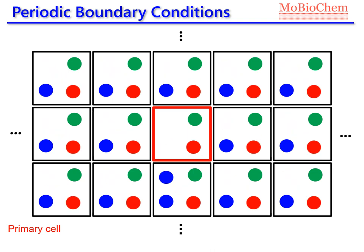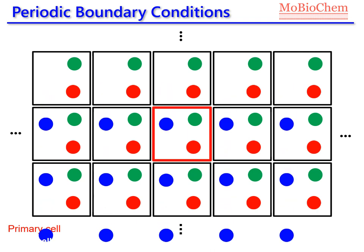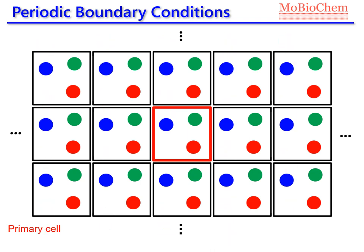If the blue molecule leaves the primary cell, another blue molecule enters the primary cell from a replica cell. In this way, we conserve the number of atoms in each of the cells.